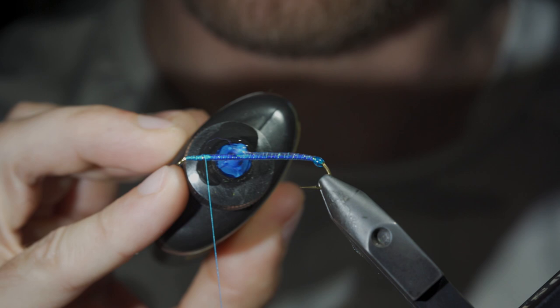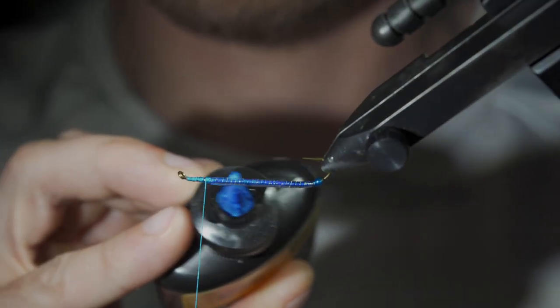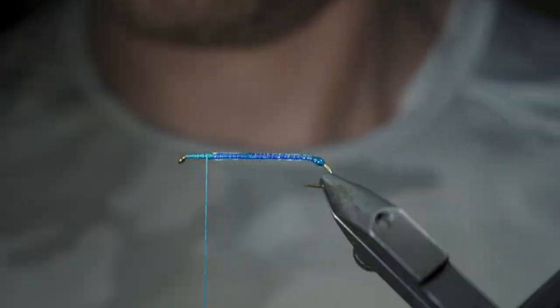We'll then grab some more UV resin, painting this over our lateral scale. This will help add some shine, as well as durability to our pattern.